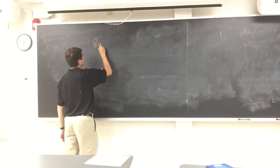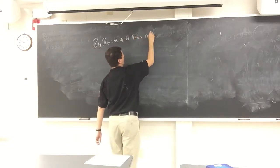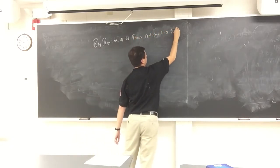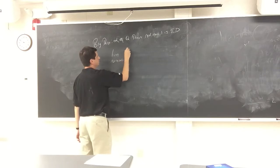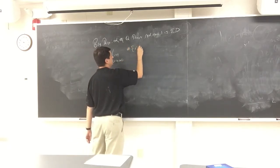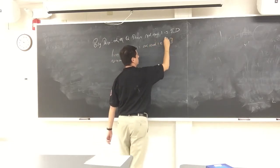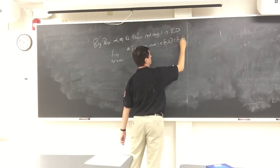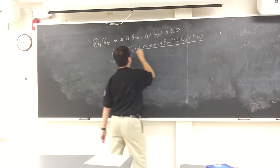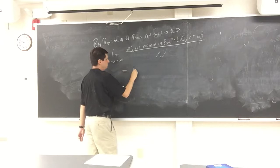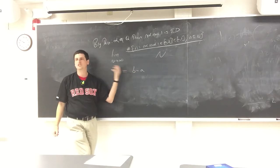The big theorem we have is: if α is irrational, then n·α mod 1 is equidistributed. What that means is that the limit as N goes to infinity of the count of n ≤ N with n·α mod 1 in [a,b], divided by N, equals b minus a. So in the limit, the amount of time you find yourself in any segment is just the length of that segment.